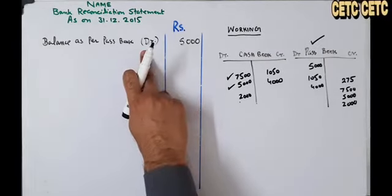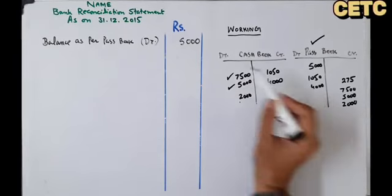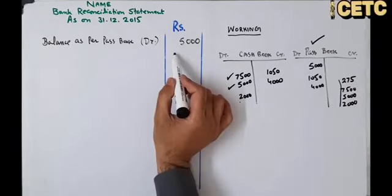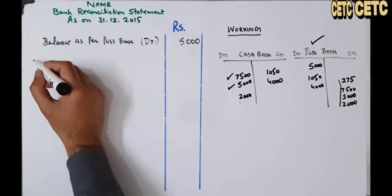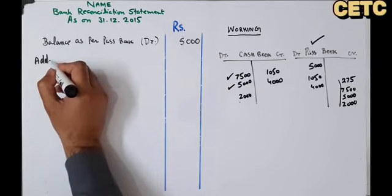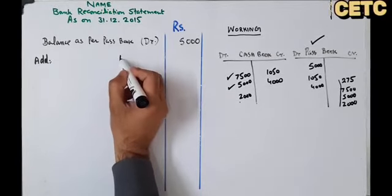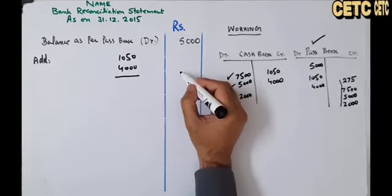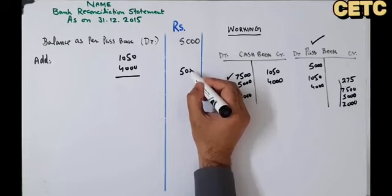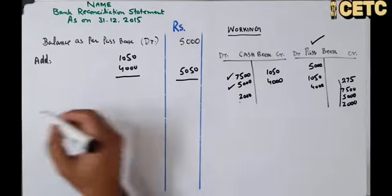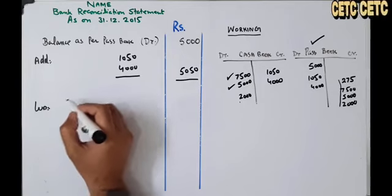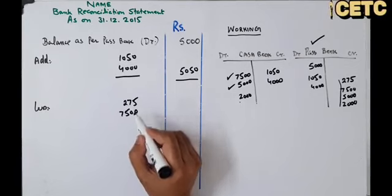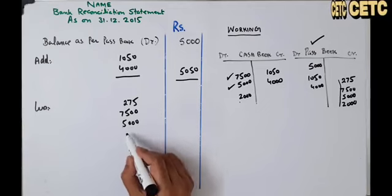اب دیکھیں: یہ debit balance ہے۔ دو چیزیں debit ہو رہی ہیں — یہ plus ہو جائیں گی۔ اور چار چیزیں credit ہو رہی ہیں — یہ minus ہو جائیں گی۔ پہلے add کر لیں: 1,050 اور 4,000 — ان کو add کریں۔ پھر less کریں: 275، 7,500، 5,000، اور 2,000۔